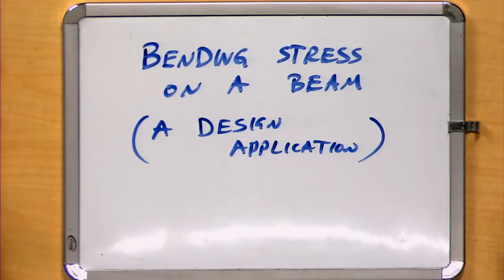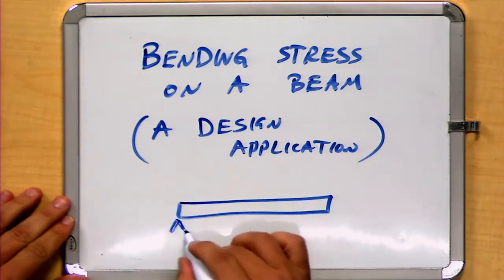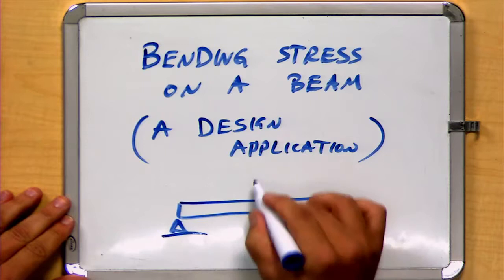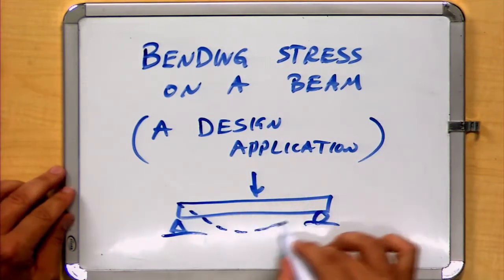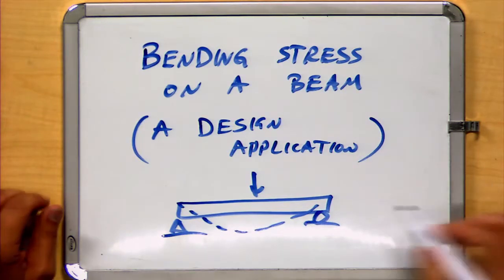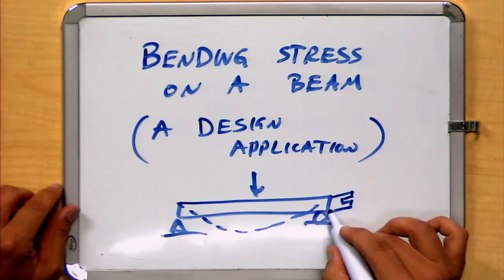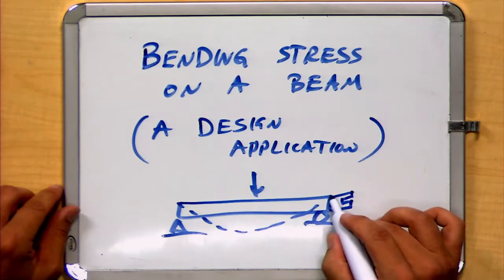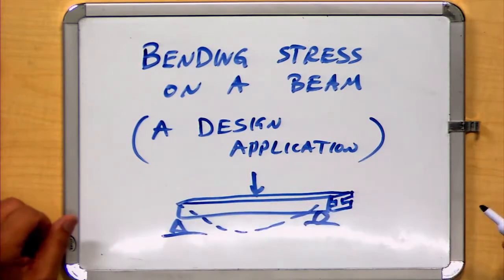We've had the opportunity to talk a little bit about internal moments that are created when a beam is placed in a condition of bending. And we've also had the opportunity to talk about something known as the moment of inertia, which takes the geometry of the beam into account for how much it resists that bending.